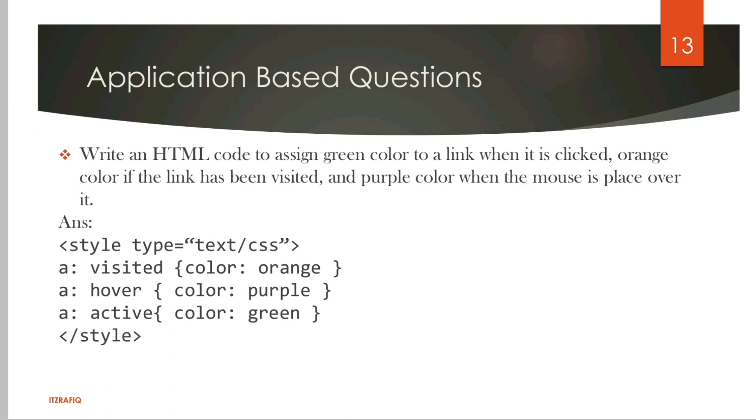Last application question: write the HTML code to assign green color to a link when it is clicked (active link), orange color when it has been visited (visited link), and purple when the mouse is placed over it (hover). We'll write: A:visited with color orange, A:hover with color purple, A:active with color green, then close the style tag. This way we'll write the command.